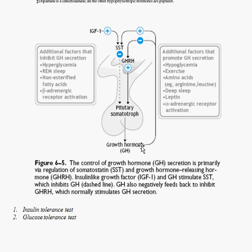We usually measure growth hormone via IGF, which is one of the products of growth hormone. Conversely, for growth hormone excess: if you induced a state of hyperglycemia, you would expect growth hormone and IGF levels to decrease. If they did not decrease, that indicates some mechanism is preventing suppression — usually a tumour of the anterior pituitary cells that secrete growth hormone, called somatotrophs.